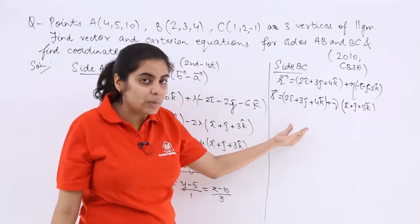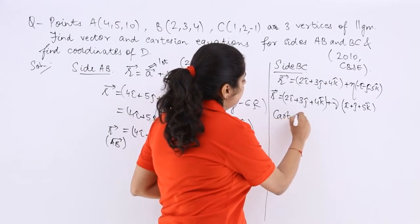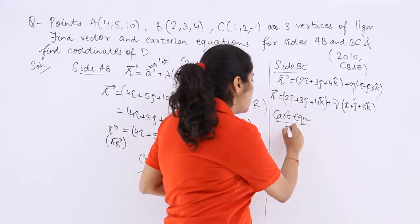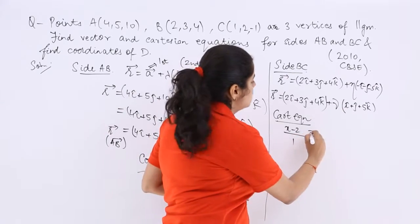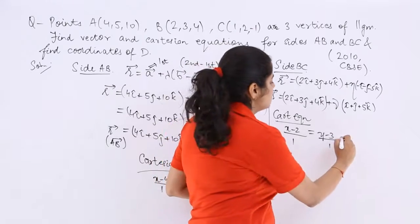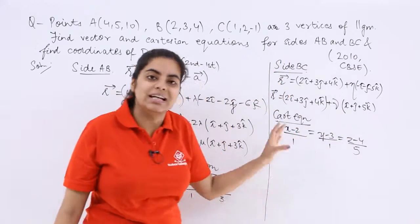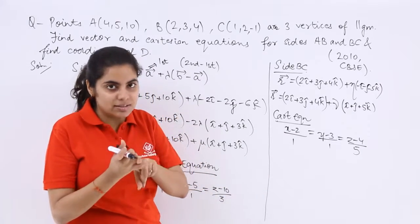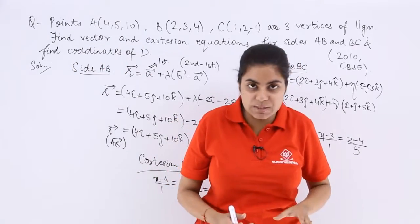This is again the vector equation for the side BC. Let us find out the Cartesian equation for BC. X minus 2 upon 1 equals y minus 3 upon 1 equals z minus 4 upon 5. So this is the Cartesian equation. The two things have been done. One is vector equation, the other is Cartesian equation. One was for the side AB, the other was for the side BC.